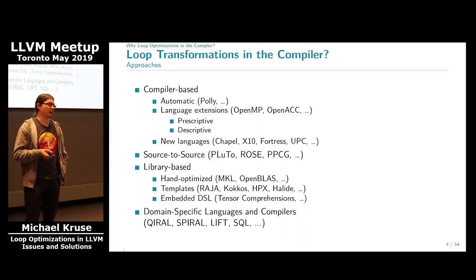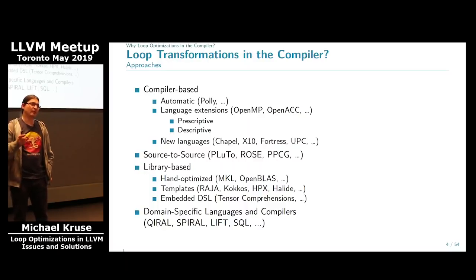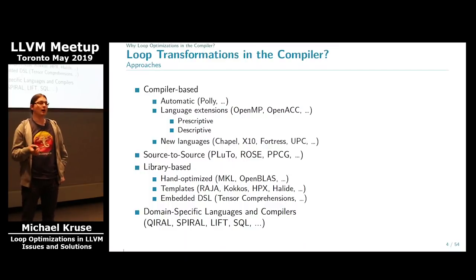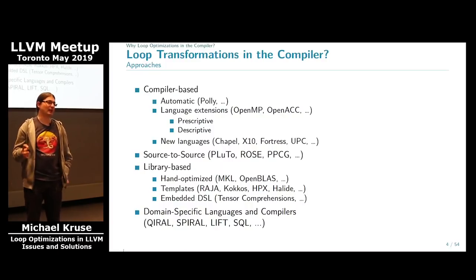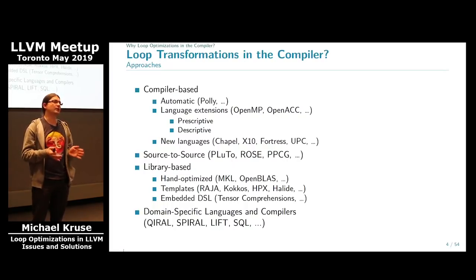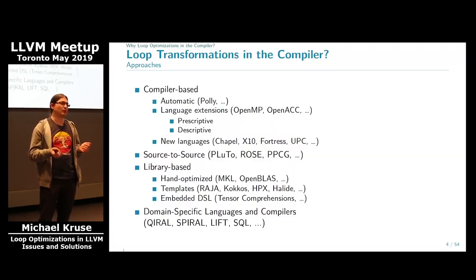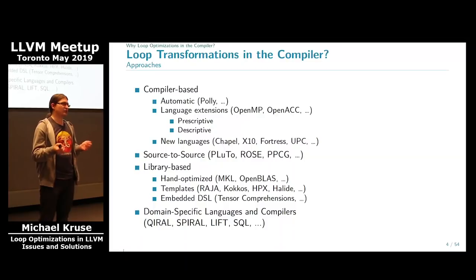Or you can have language-based semantics for loop transformations, up to entirely new languages like Chapel or Xtend, which are more based on concepts that can be considered loops. You can also have something that works before the compiler — a source-to-source transformation tool that takes source code and outputs new source code which can be compiled by a regular compiler. Another approach is to have your optimization captured in a library — you hand-optimize your loop, put it in the library, and link against it.